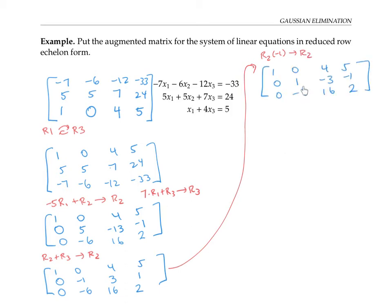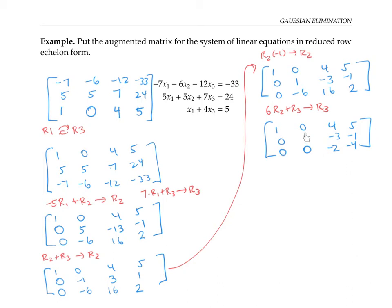Now I'm going to work to get zeros below this leading one. To get a zero here, I can do that by taking six times row two and adding it to row three — six r2 plus r3 — and I'll replace r3 with that. I'll copy the first two rows over. In the third row: six times zero plus zero is zero; six times one minus six is zero; six times negative three plus 16 is negative two; and six times negative one plus two is negative four. So now I've got a leading one in the first row with zeros below it, a leading one in the second row with zeros below it. My next job is to get a leading one in the third row, and to do that I'm just going to multiply the third row by one over negative two.